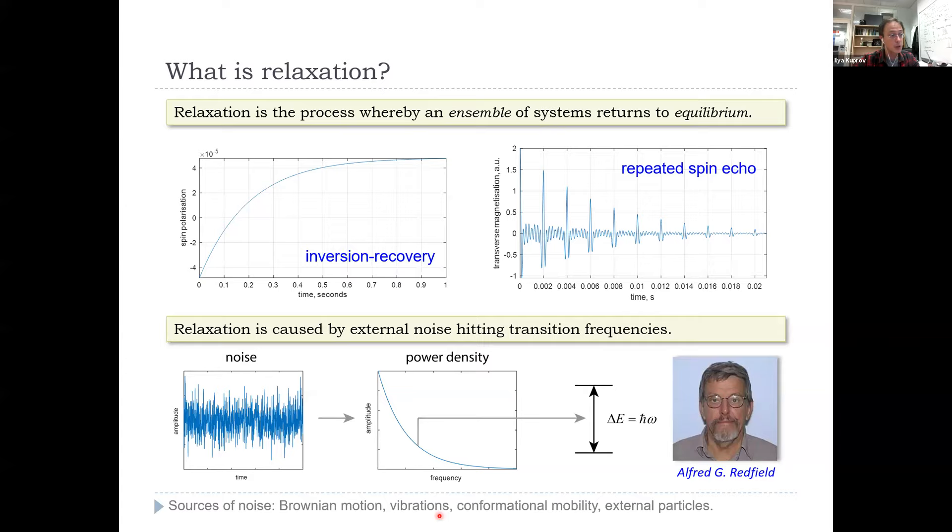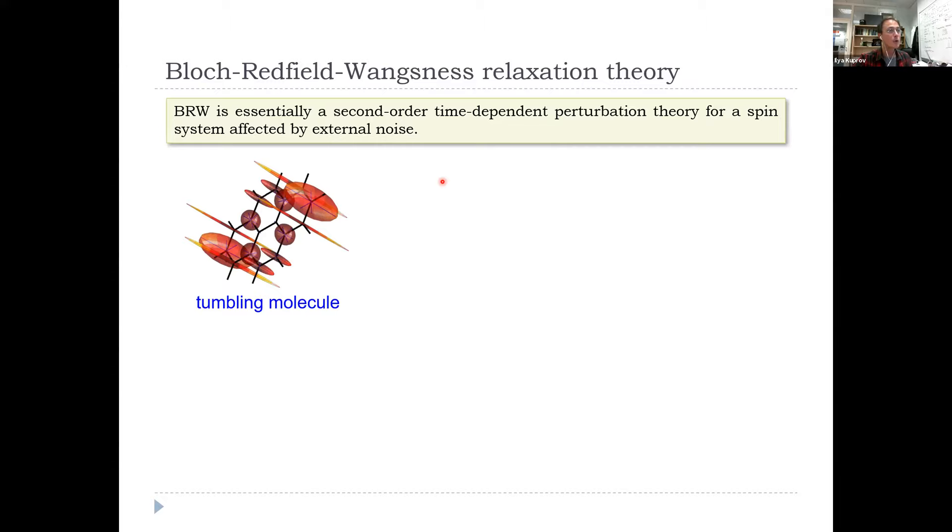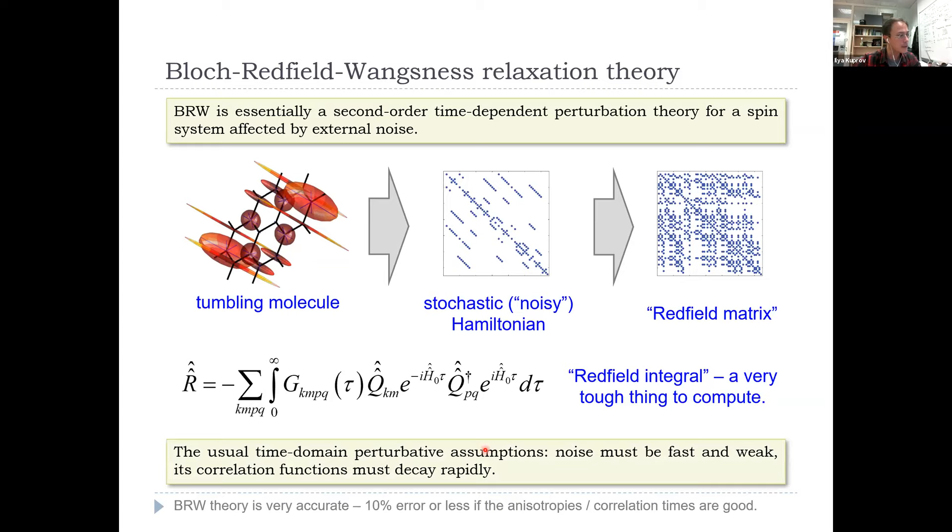The sources of this noise are Brownian motion, vibrations in crystals, conformational mobility, external particles, random fluctuations of magnetic fields, whatever it is. This relaxation theory has the name of Felix Bloch, Al Redfield, and Bloch's student Banks Ness. It's essentially second order time dependent perturbation theory for a spin system that has noisy Hamiltonian, mostly tumbling and translational diffusion in liquids. After second order perturbation theory, you get extra transitions in the system, the so-called Redfield matrix. The integral itself is horrendously complicated. It's really tough to compute because the dimensions of these matrices are very large.